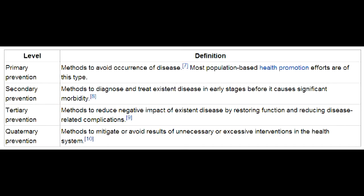What is tertiary disease prevention? Tertiary disease prevention is to reduce disability from disease. An example of this would be chemotherapy.